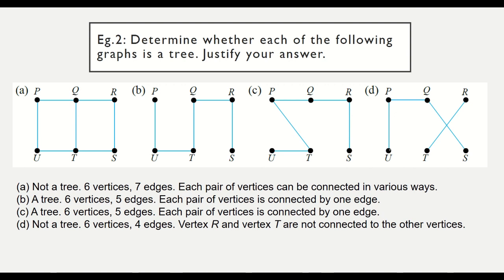For the last diagram, we have six vertices but only four edges, which is already incorrect. Furthermore, vertices R and T are not connected to other vertices. So this is not a tree. To make it a tree, you simply connect the isolated vertices so that you have five edges total.